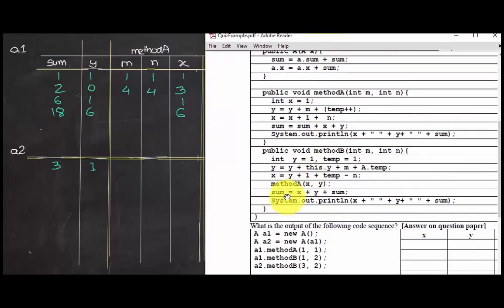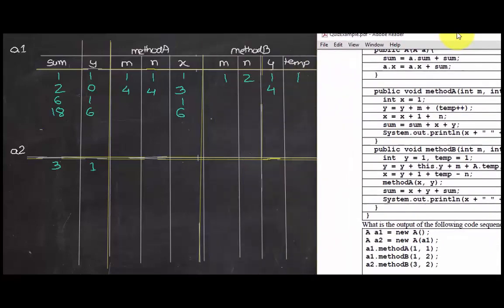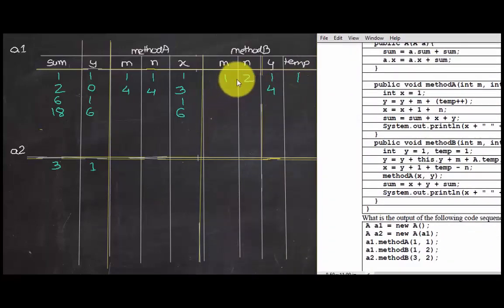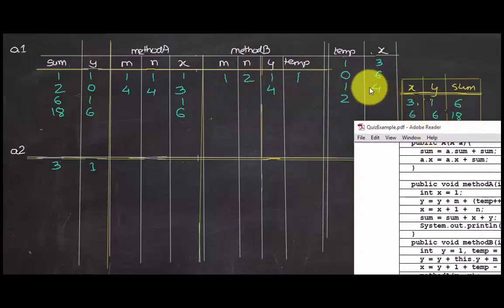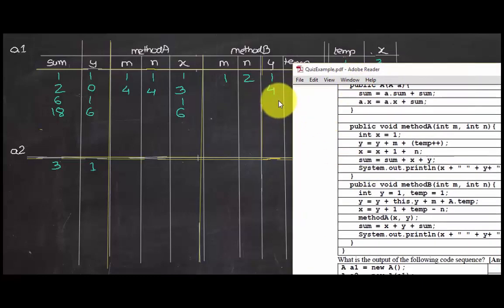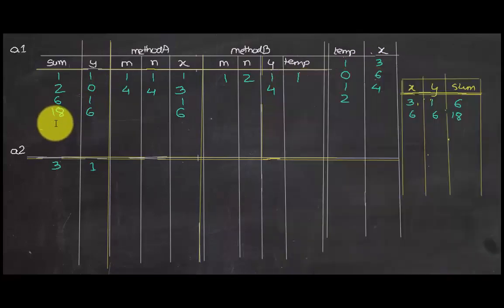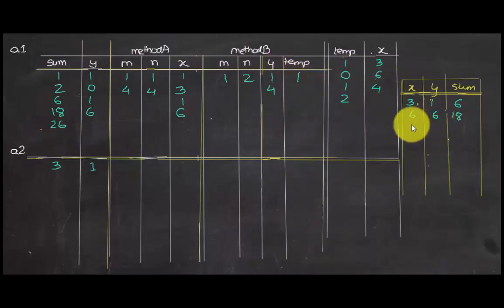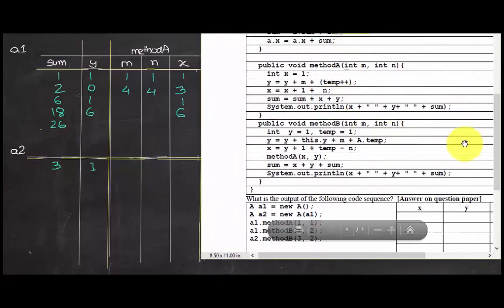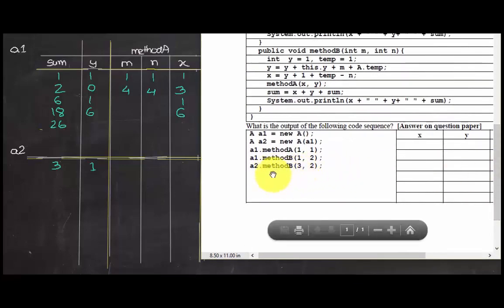Back in methodB, sum equals x plus y plus sum. The x used is the static variable x, which is 4. So 4 plus y which is 4 equals 8, plus sum which is 18, gives 26. So sum equals 26. The final printed values for this part: x is 4, y is 4, sum is 26.